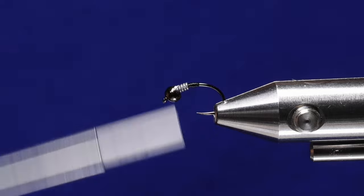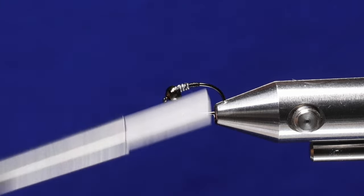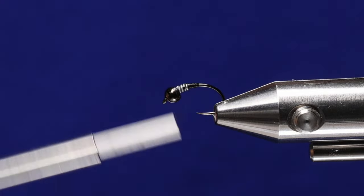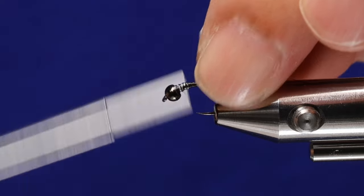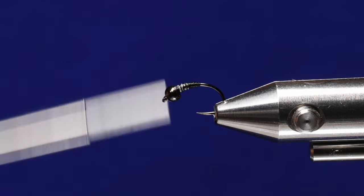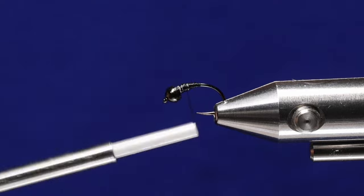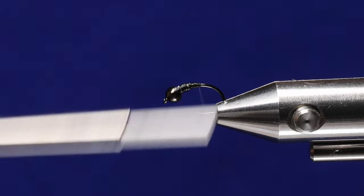Once you have your thread started, just going to build up a slight little taper here from where the lead wraps stopped to the shank of the hook. Don't worry too much about covering all the lead wire wraps.